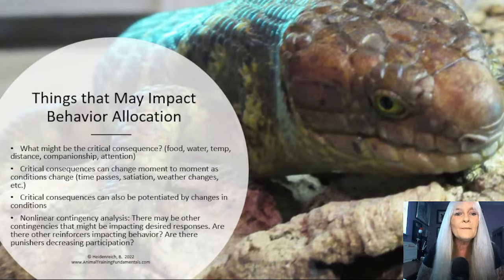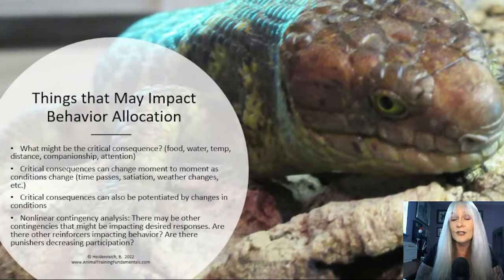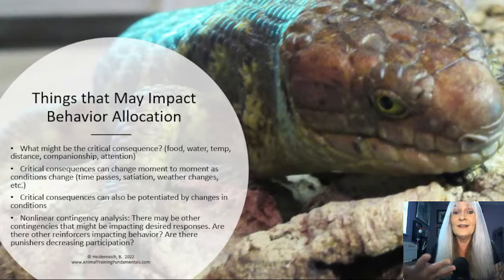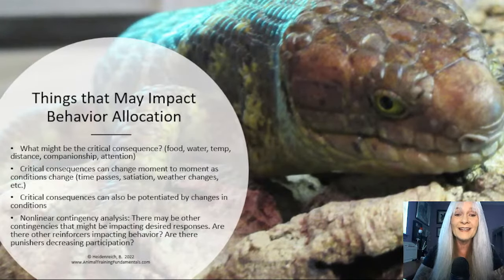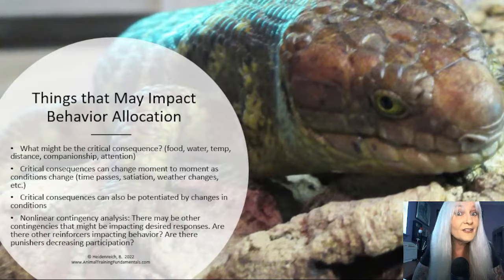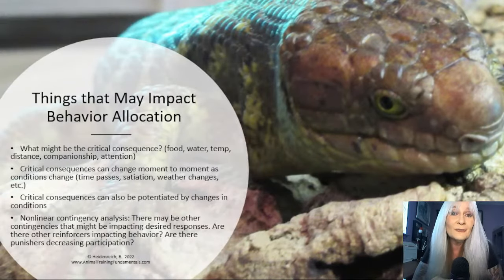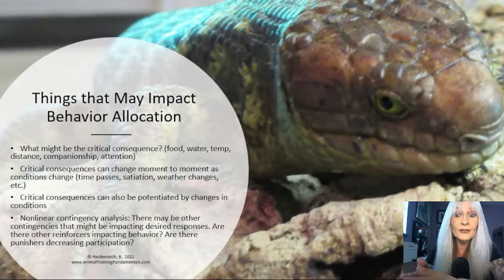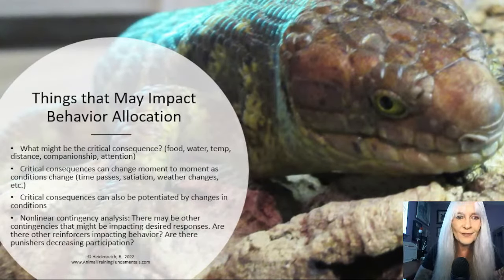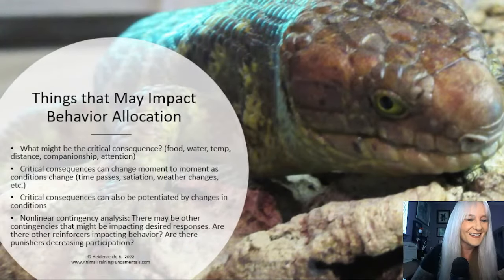Critical consequences can be potentiated by changes in conditions — for example, withholding breakfast makes food more important. And there's our non-linear contingency analysis: there may be other contingencies impacting desired responses. Are there other reinforcers impacting how behavior is allocated? Are there punishers decreasing participation, like competition between other animals? All those things may be impacting what the animal is going to do. Now let's look at some videos.